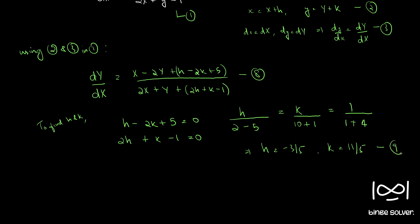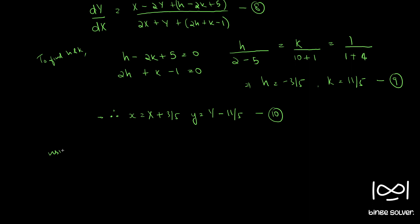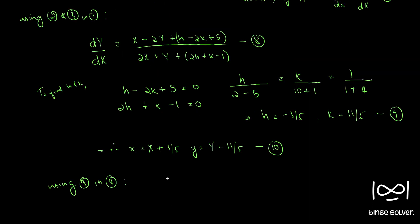Using equation 9, we can write: small x equal to X plus 3 by 5 and small y equal to capital Y minus 7 by 5. Let this be equation 10. Now using equation 9 in equation 8, we have d capital Y by d capital X equal to (X minus 2Y) by (2X plus Y).